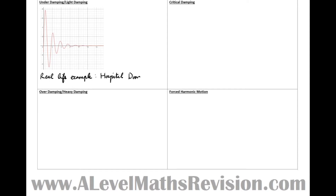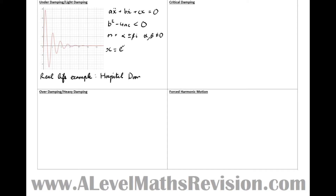These types of oscillations occur when we've got a second order differential equation of this form — homogeneous, the right hand side equals zero — and we've got that b squared minus 4ac is less than zero. The solution of the auxiliary equation takes the form m equals alpha plus or minus beta i, where alpha and beta aren't equal to zero, i.e. the solutions are strictly complex. This leads to a solution x equals e to the alpha t multiplied by (a sin(βt) + b cos(βt)).